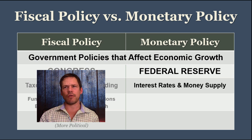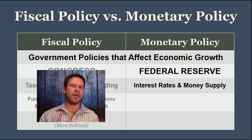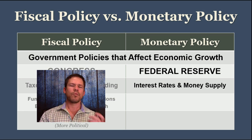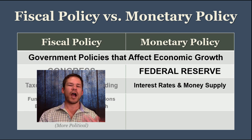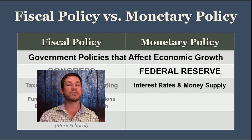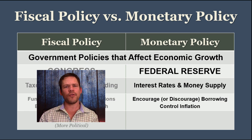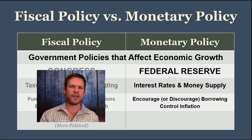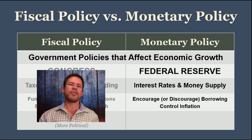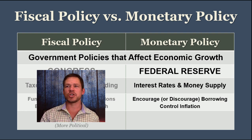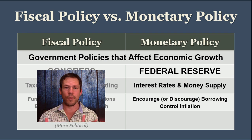Monetary policy deals with interest rates and the money supply. These two things are controlled by the Federal Reserve — how much people are going to charge in interest when there's borrowing, and how much money is going to be out there. The Fed regulates interest rates to encourage or discourage borrowing.